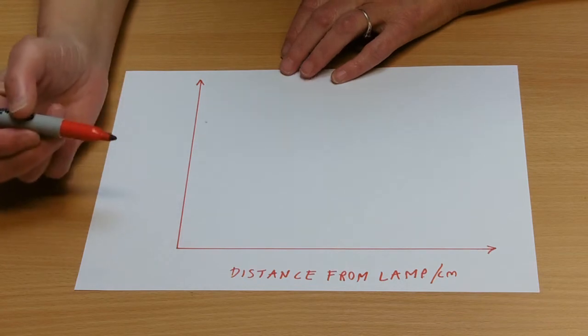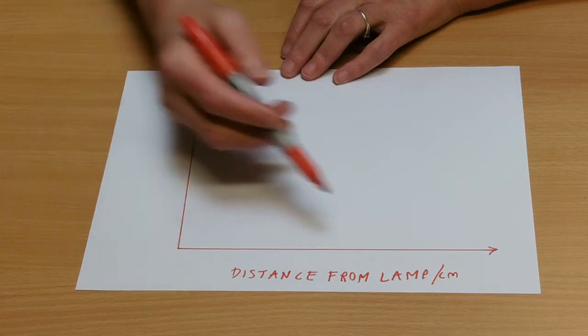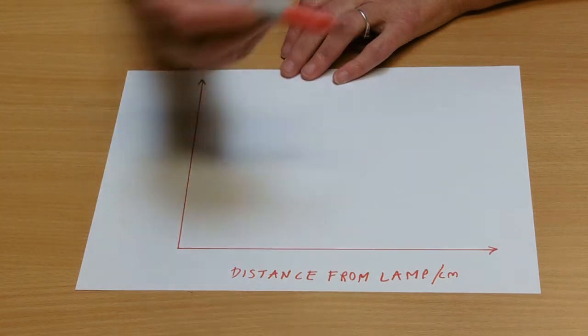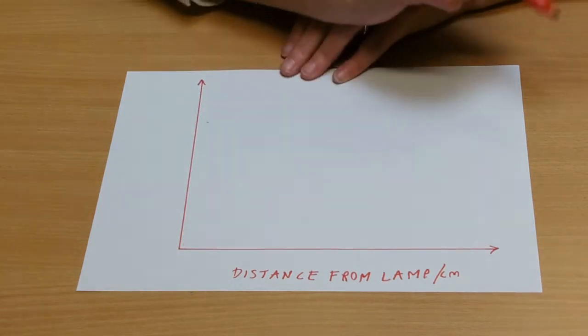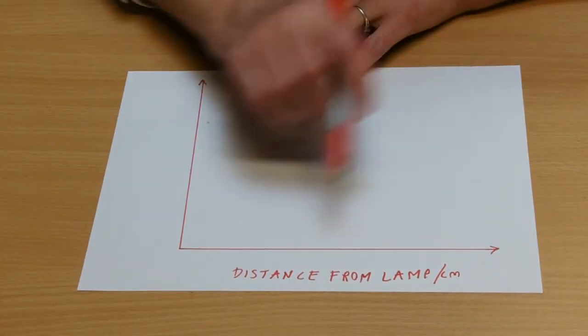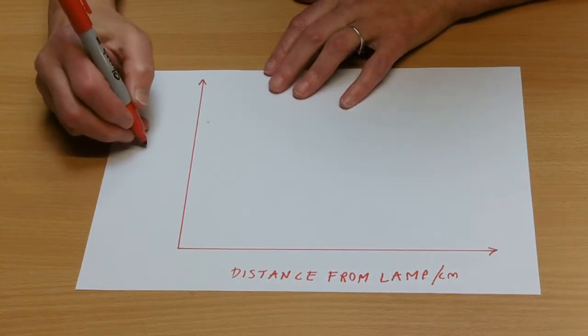And the colour change, the thing that we're measuring, is the thing that goes at the side, because that depends on how far away. It depends, get it? Depends on how far away from the lamp it is. What colour it changed depended on how far away. So, how did we measure the colour change?